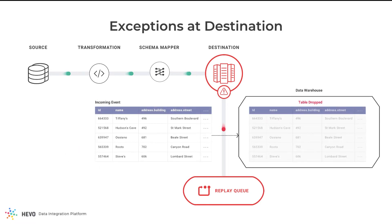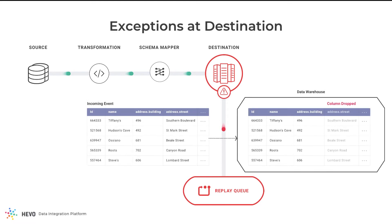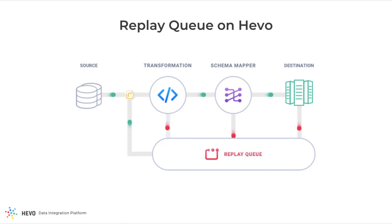There's a possibility that a table in the destination which was mapped to a source event has been dropped — this could have happened accidentally or unknowingly. Or a field in the destination table which was mapped to a field in the source event has been dropped. Even under such cases, the event will be parked in the Replay Queue. HEVO catches all the exceptions that arise in any stage and stores them in the Replay Queue so that you don't have to worry about losing your data. Let me show you how HEVO does it.